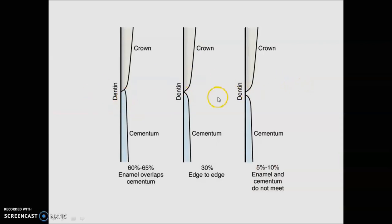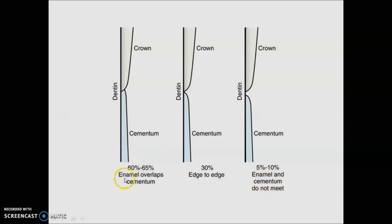Let's start with our image-based lecture. The first question is about enamel and cementum meeting at the CEJ. Most often enamel overlaps cementum; there is edge to edge, there is a butt joint, and around 5 to 10 percent, enamel and cementum do not meet. Remember: enamel overlaps cementum in around 60 to 65 percent, edge to edge is 30 percent, and enamel and cementum do not meet is around 5 to 10 percent.